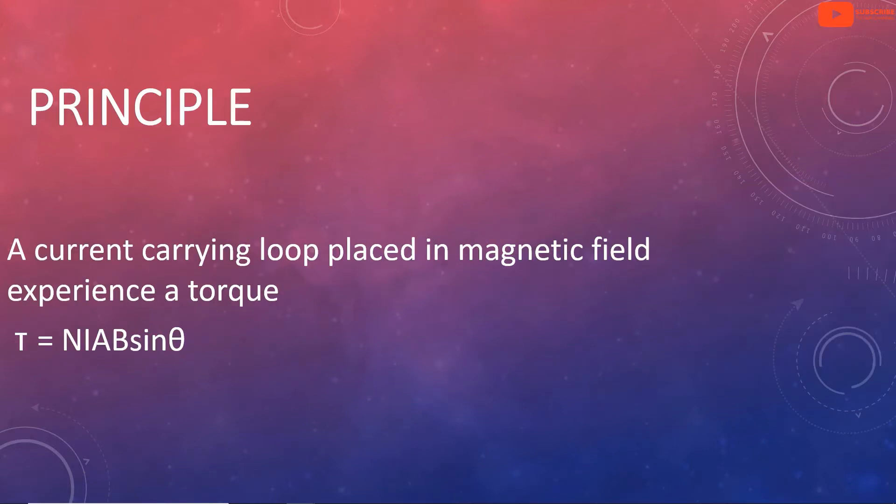What is the principle of the moving coil galvanometer? There is a current carrying loop in a magnetic field. We are going to use the torque experience. A current carrying loop placed in a magnetic field experiences a torque. We are going to use the experience of the torque.